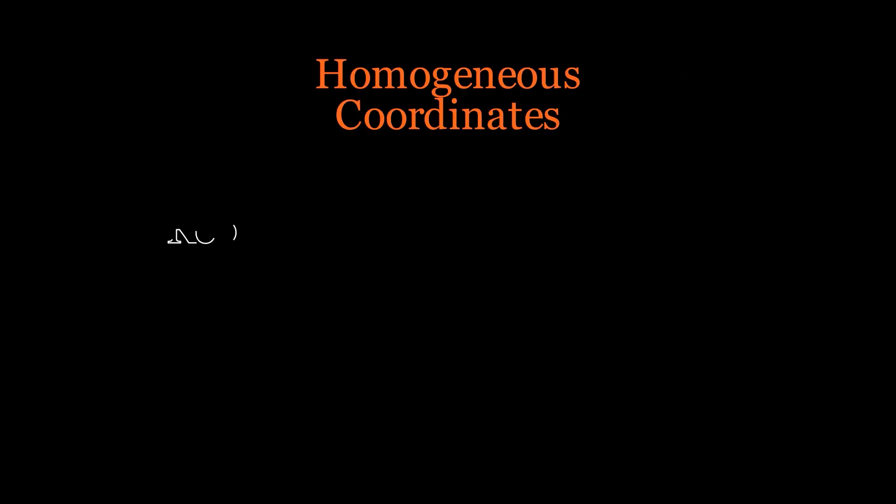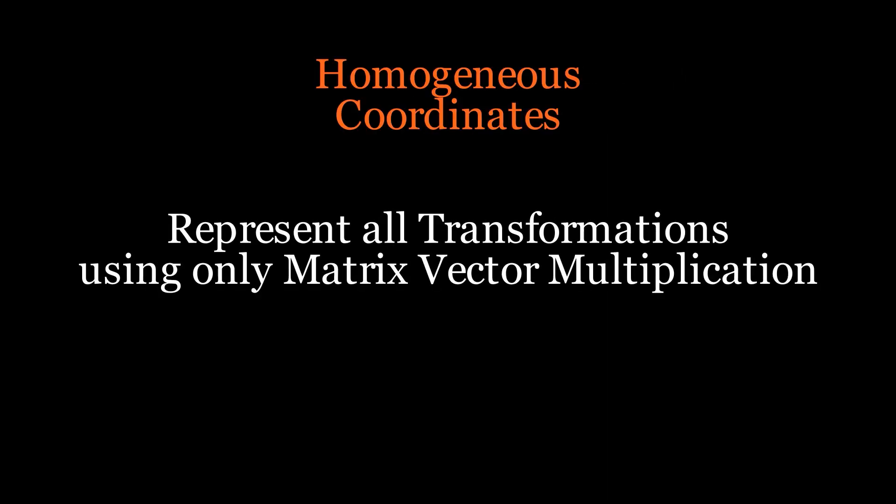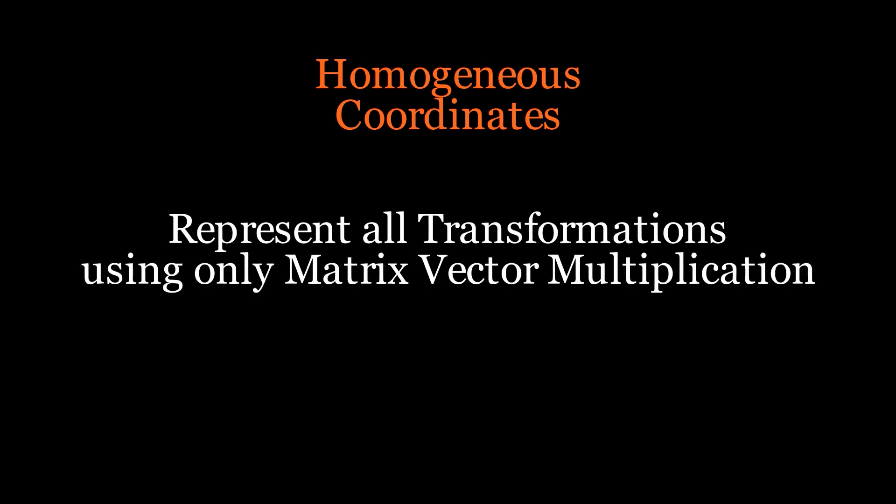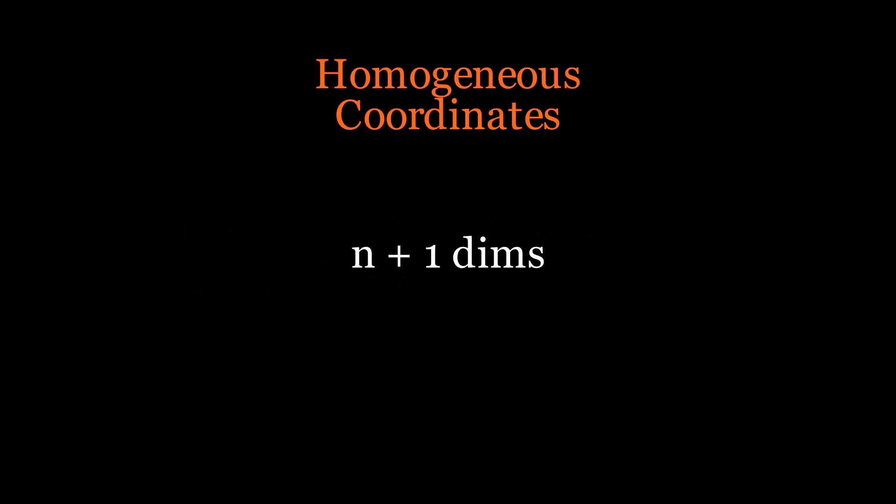This gives us the power to represent all transformations as just matrix vector multiplications. We require n plus 1 dimensions to represent an n-dimensional vector in homogeneous coordinates.